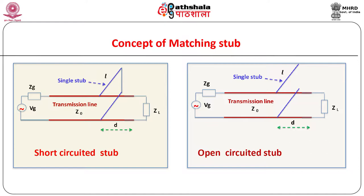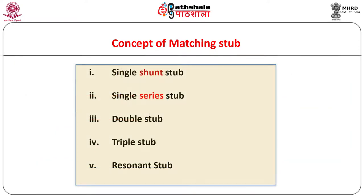Determining precise values of L and D are the main computations involved in stub matching technique. The values of distance D and the length L of the stub depend upon whether the stub is desired to be inductive or capacitive. Different types of arrangements of stubs can be found in literature, some of which are as shown.